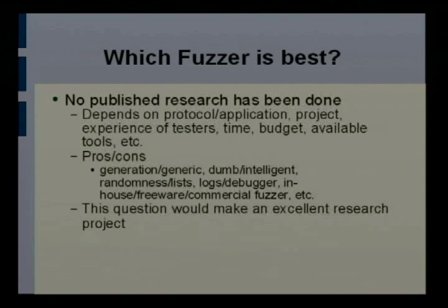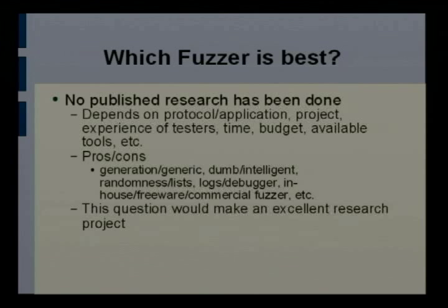The question of which fuzzer — commercial, open source, generation, or generic — is better has actually no research behind it, and it would be a great research problem. Code coverage could be a metric, but like we talked about, it doesn't give a complete picture. Number of bugs found is a fairly good metric, but hard to determine on software not yet tested. You could maybe write software where only one person knew the bugs and run a fuzzer shootout. Nobody's done that.